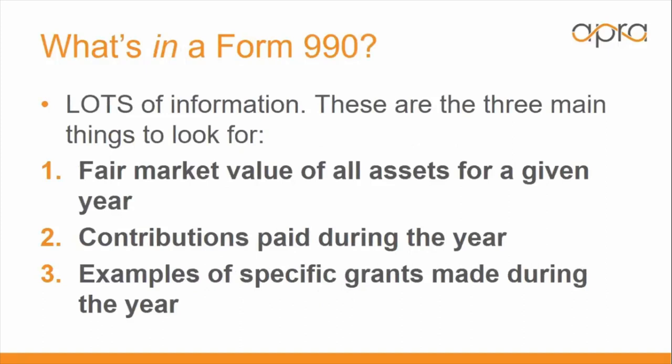Now let's talk about what's in a Form 990. There's a whole lot of information, and these are the three main things to look for. The first is the fair market value of all assets for a given year, which includes income on investments, gifts made to the foundation — oftentimes through family members — so that the foundation can then make grants over the course of the next year. Market value also factors in expenses of the foundation, which can include salaries if the foundation is staffed with paid directors and officers.